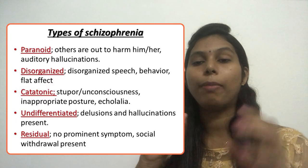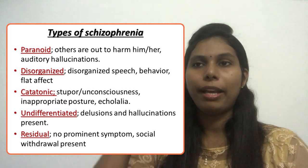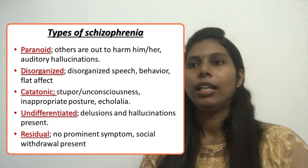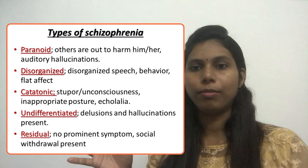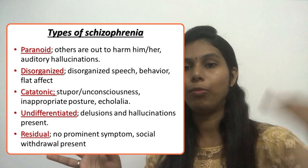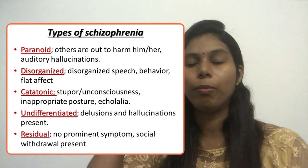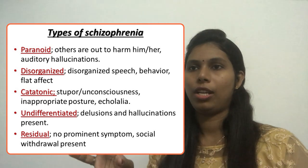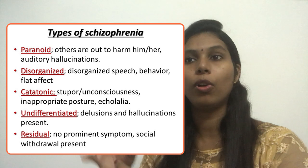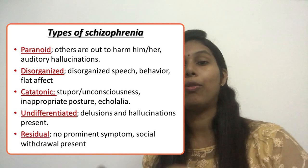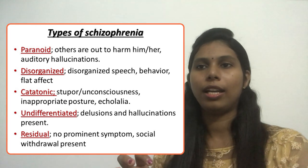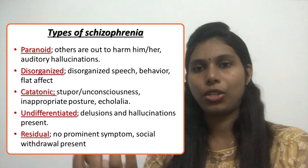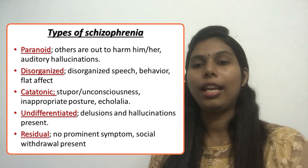The first type is paranoid schizophrenia. In paranoid schizophrenia, the client thinks that the people around them have come to harm them or are going to make some threat to the patient — others are out to harm him or her. They usually have auditory hallucinations. That is called paranoid schizophrenia.